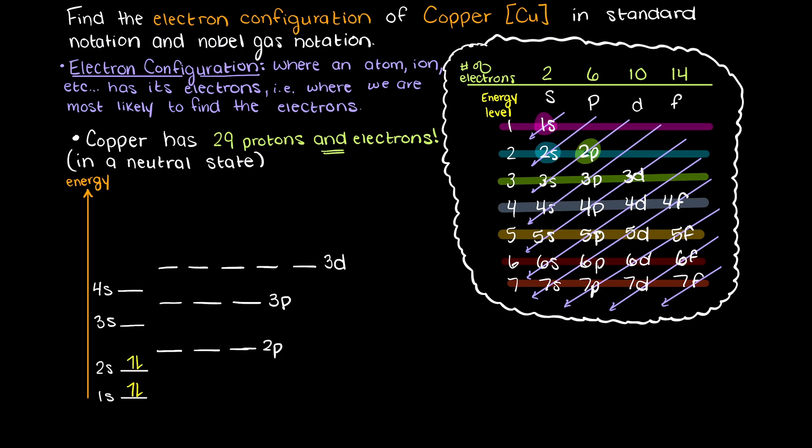Next following our arrows we have 2s, which again can take 2 electrons, then we have 2p, p subshells can hold 6 electrons, so we now have 19 electrons left to place. Next we have 3s which will take 2 electrons, and then again 3p which will hold 6. This leaves us with 11 electrons left to place.